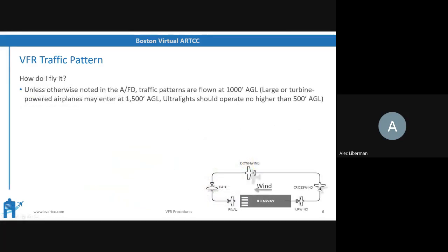How do you fly a traffic pattern? Unless otherwise noted in the Chart Supplement, traffic patterns are flown at 1,000 feet above the ground. Some exceptions apply to larger or turbine aircraft, which fly at 1,500 feet above the ground. Ultralights and helicopters operate at 500 feet above the ground.